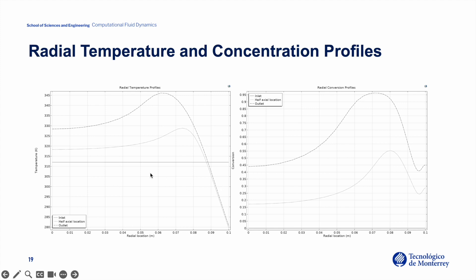The first line shows temperature at the inlet, which is constant across the radius. The second line shows how temperature changes at the halfway axial location, and the third line shows temperature at the outlet as a function of radial position. Similarly, we present conversion at different axial positions: conversion at the inlet, halfway, and at the outlet.